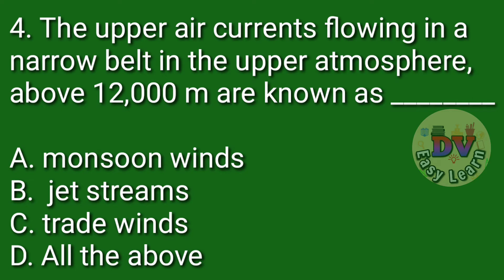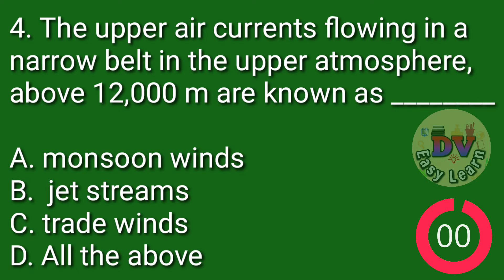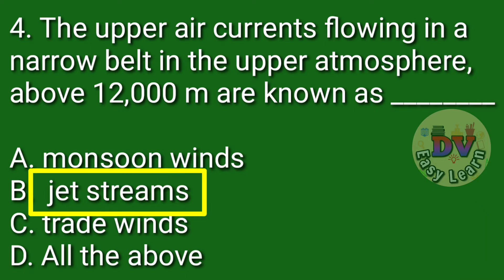Question number 4. The upper air currents flowing in a narrow belt in the upper atmosphere above 12,000 meters are known as — Correct answer: Jet streams.